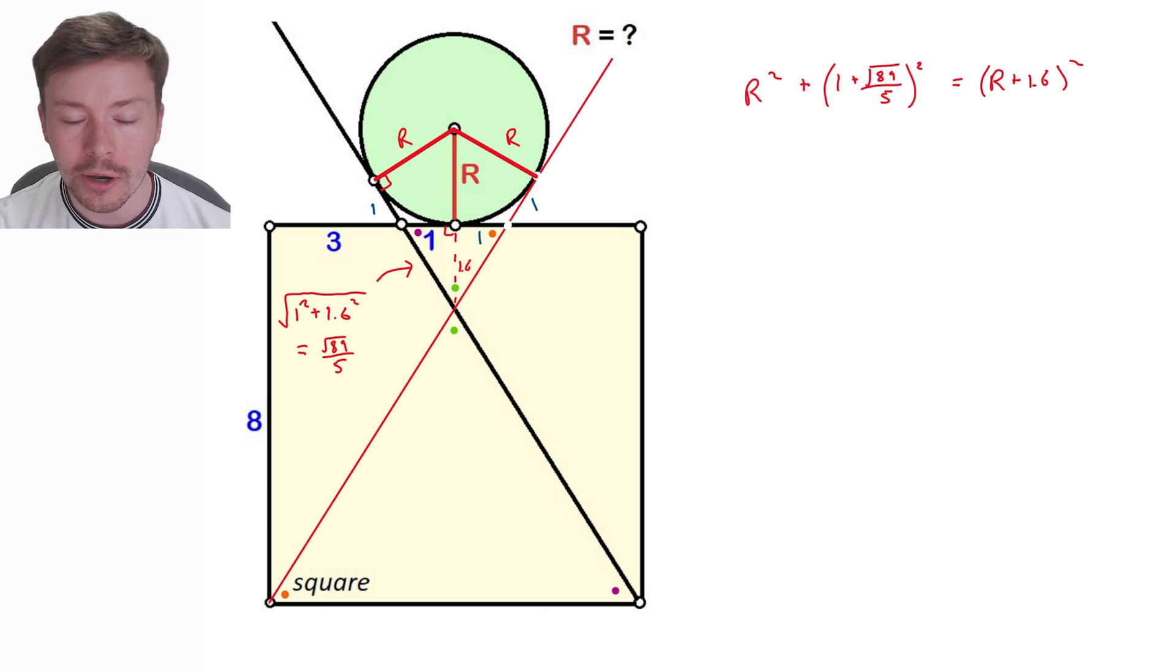Using Pythagoras now over with one half of this diamond, essentially, that I've got at the top with my circle and my small triangle, I've got R squared plus, and then I've got the 1 plus what I've just worked out, root 89 over 5 all squared is equal to R plus 1.6 all squared. Once you've got that, obviously you can do it using your calculator, but it's always best if you can to get things in an exact format. I'm going to expand the right-hand side brackets first because that's quite easy. I'm going to get R squared plus 1.6, 1.6 R, so that's 3.2 R, and then 1.6 squared is 2.56. I've also simplified the bracket on the left-hand side. I've put the 1 inside the fraction, so 1 is 5 over 5, so we get 5 plus root 89 over 5.